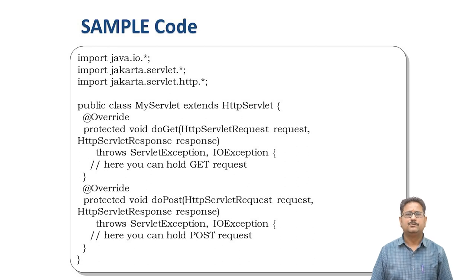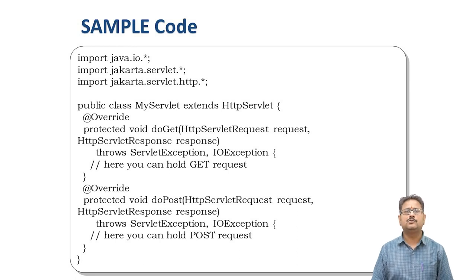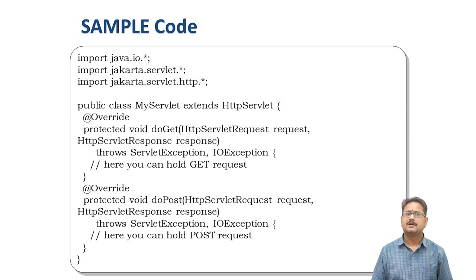This is the sample code for using the doGet and doPost methods. First, we import packages: java.io.*, jakarta.servlet.*, and jakarta.servlet.http.*. Then we create our class — public class MyServlet extends HttpServlet. We override the protected void doGet method. The doGet and doPost methods are already implemented in the HttpServlet class; we use them in our class by overriding them. For handling GET requests, we use doGet; for handling POST requests, we use doPost.